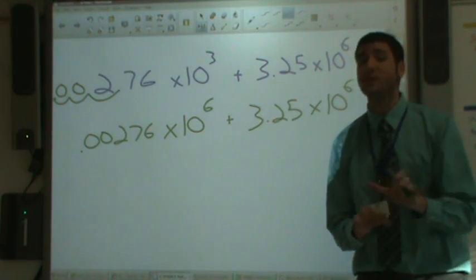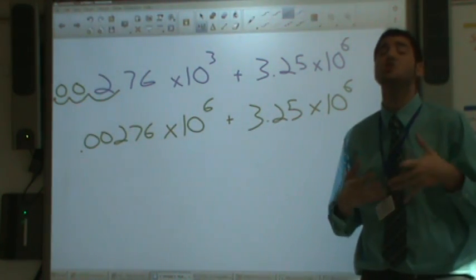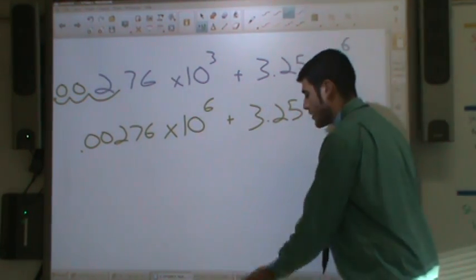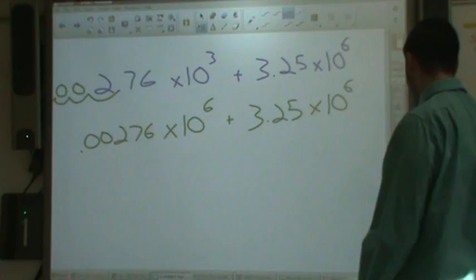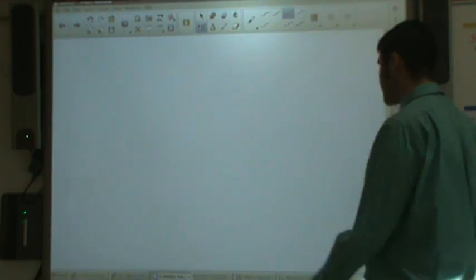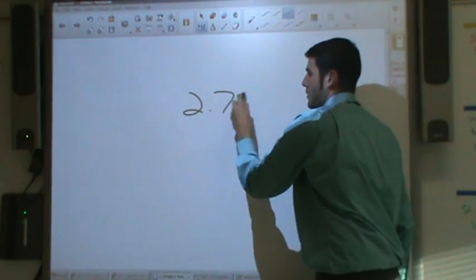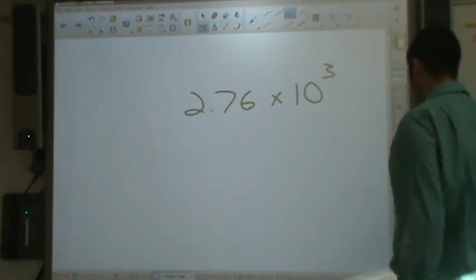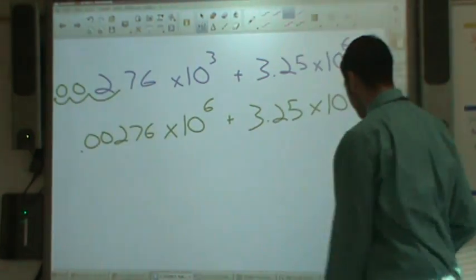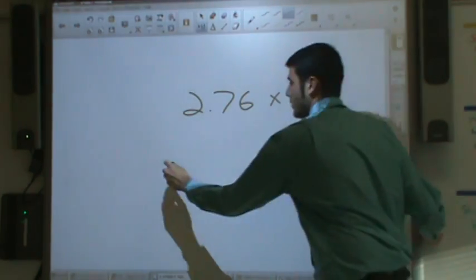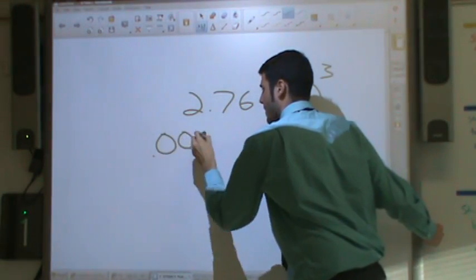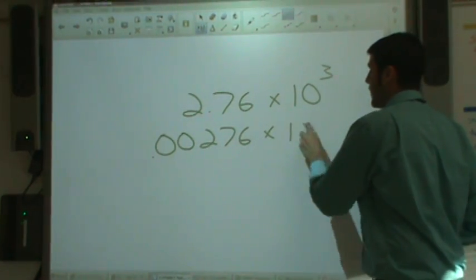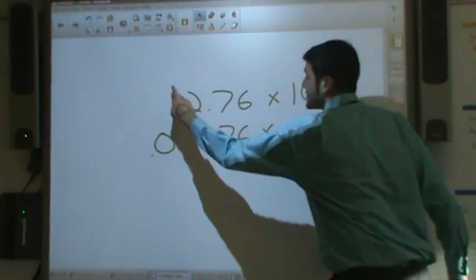Now if you look at it, I really didn't change anything here. I just changed the way it looks. These are both the same numbers. Because let's go ahead and take a look. 2.76 times 10 to the third and 0.00276 times 10 to the sixth. These are really the same exact numbers.